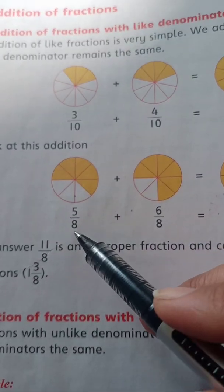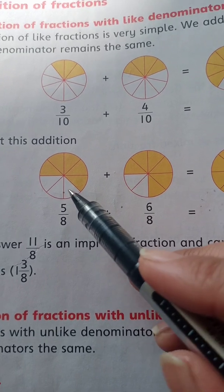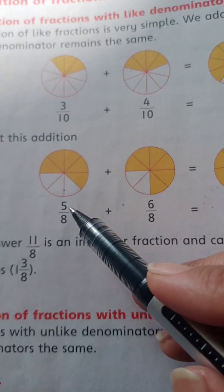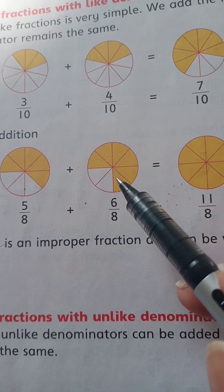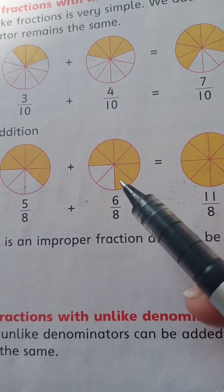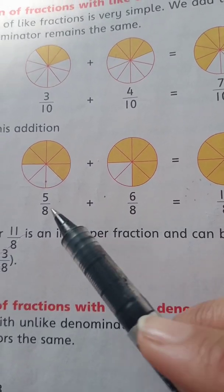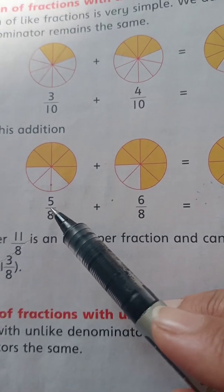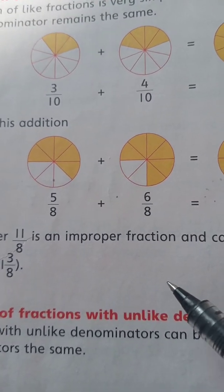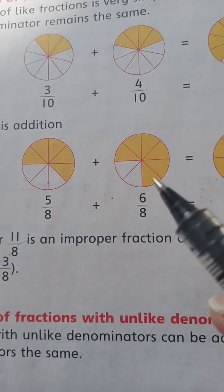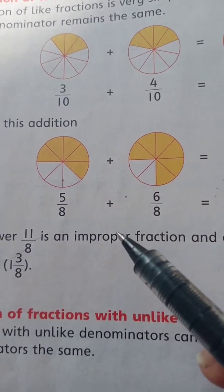Now look at this addition: 5 by 8. Total parts are 8 and shaded parts are 5, so this fraction becomes 5 by 8. And in this figure, total parts are 8 and shaded parts are 6, so this fraction becomes 6 by 8. Ab jab hum in ko add karenge, 5 plus 6 karenge toh hamare paas 11 aa jayega, divided by 8 hi likhenge — denominators ko aapne plus nahi karna.